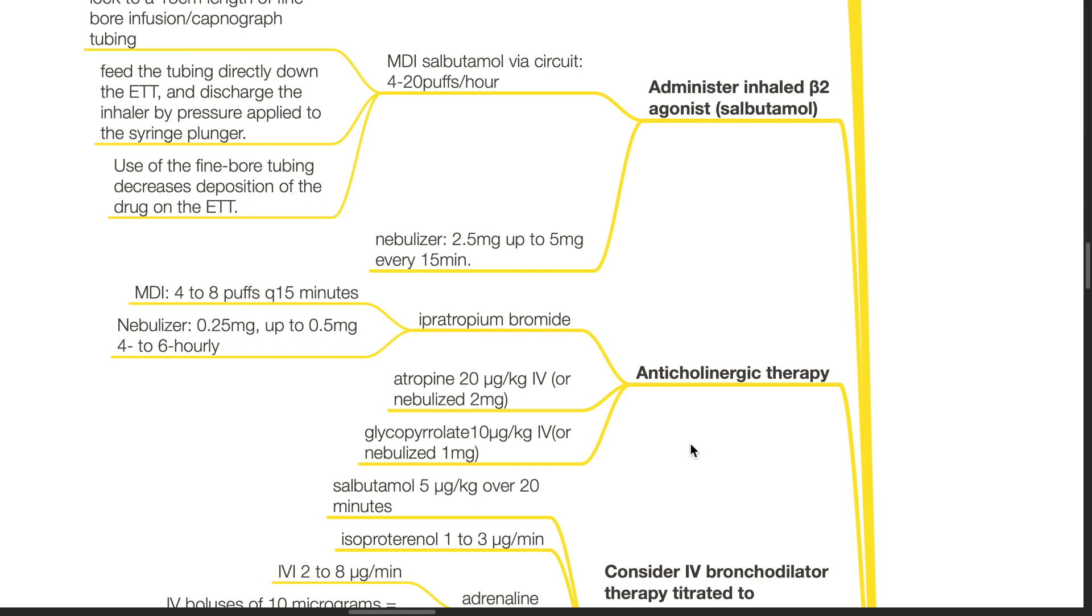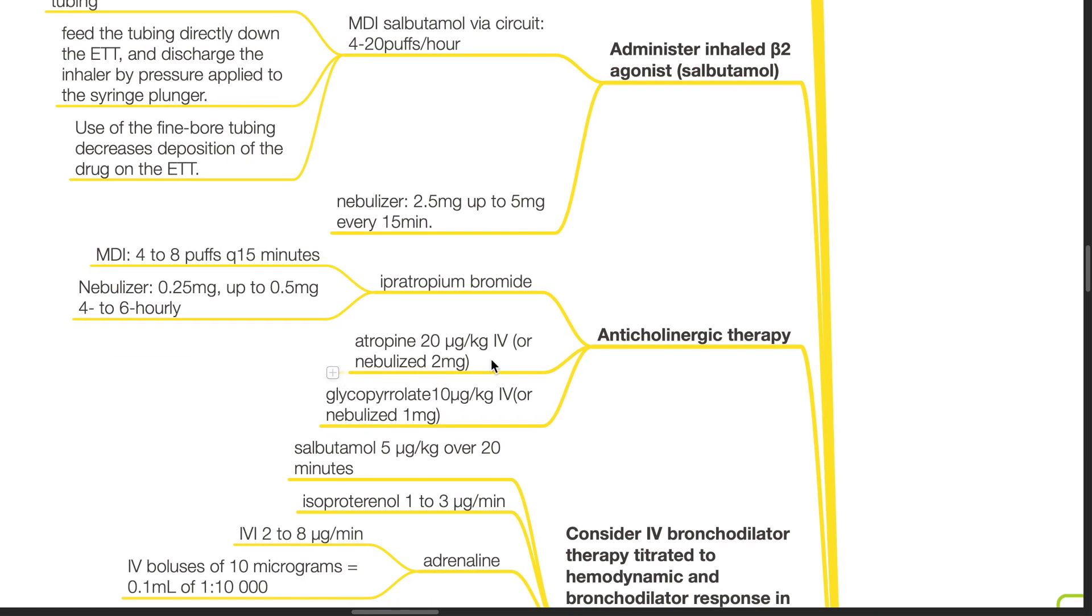Anticholinergic therapy: The use of ipratropium bromide is beneficial. It can be delivered by using MDI or nebulizer. The dose for MDI is 4 to 8 puffs every 15 minutes. For nebulizer, it is 0.25mg up to 0.5mg 4 to 6 hourly. Atropine IV 20mcg per kg or nebulized 2mg or glycopyrrolate 10mcg per kg IV or nebulized 1mg can be delivered.